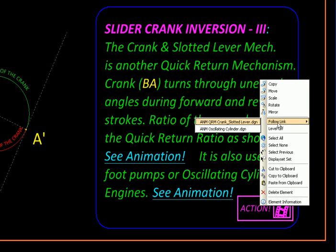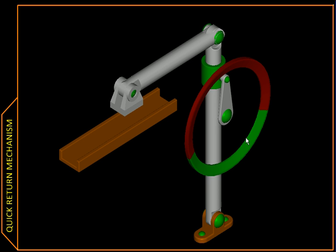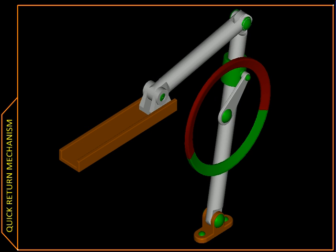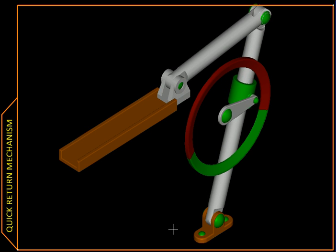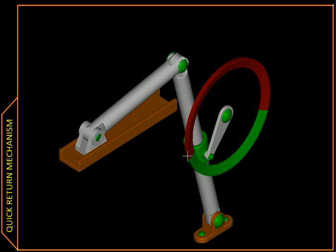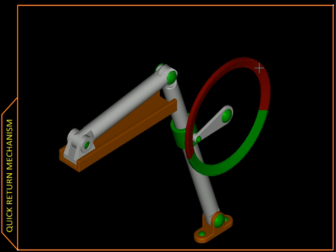There are two manifestations. First, we will see the crank slotted lever quick return mechanism. So this is how it looks in 3D. So we have marked these angles. The green is the return stroke, and red, which is a larger angle, is the forward stroke.